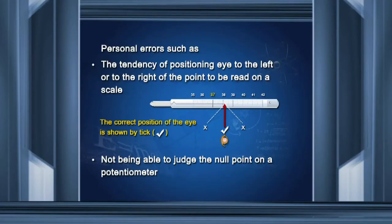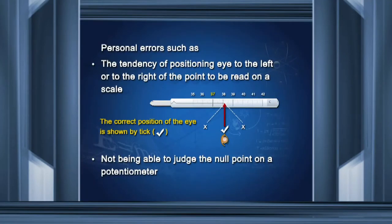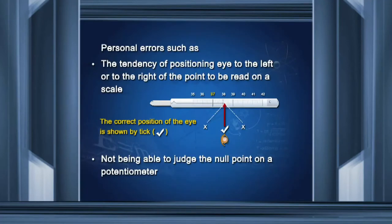The third category of systematic errors are personal errors. For example, when reading a thermometer, your eye must be either directly above or directly in front of the point to be read — if you are to the left or right, you will not read the temperature correctly. Similarly, in an experiment with a potentiometer, when the galvanometer needle shows no deflection that is the null point, but you may not be able to judge it properly, and this also leads to personal errors.